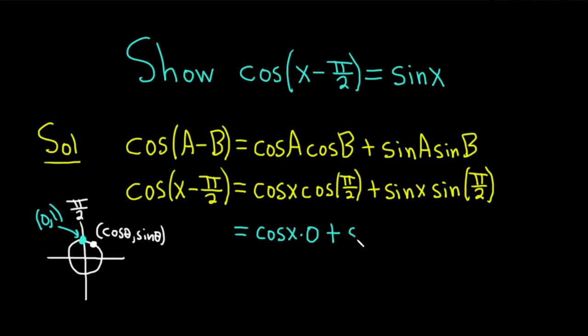plus sine of x times the sine of pi over 2, and that's the y coordinate at pi over 2. That's going to be 1.